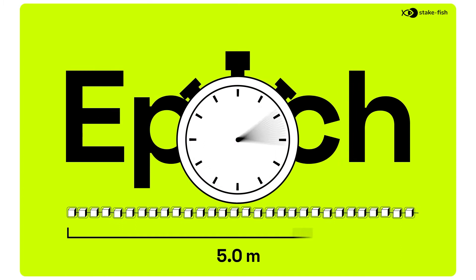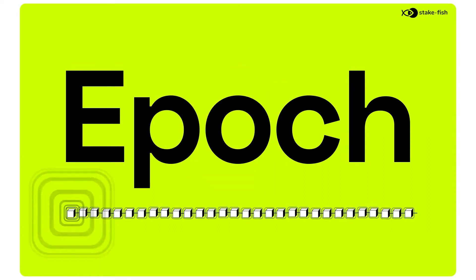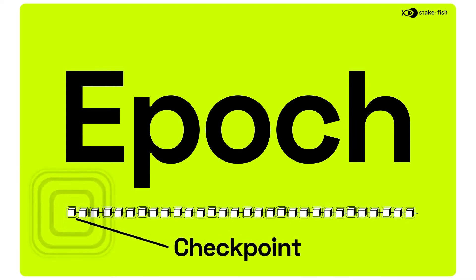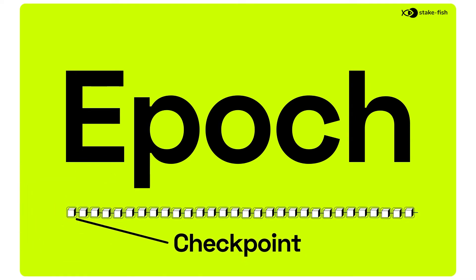An epoch lasting 6.4 minutes is made of 32 slots. The first slot of each epoch is a checkpoint. A checkpoint is when blocks from prior epochs can become finalized.